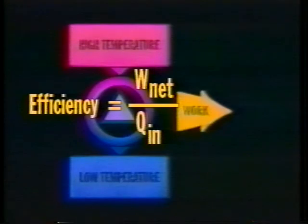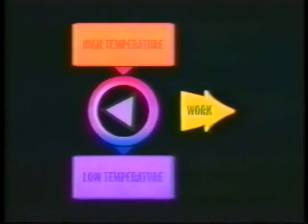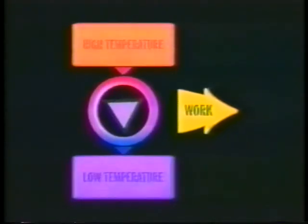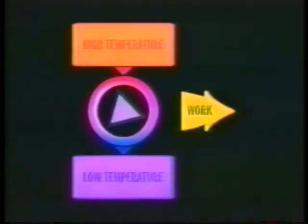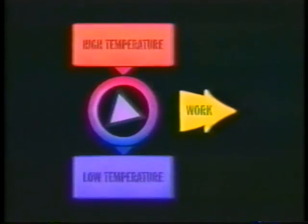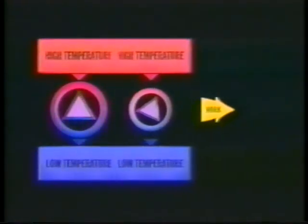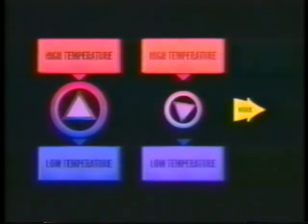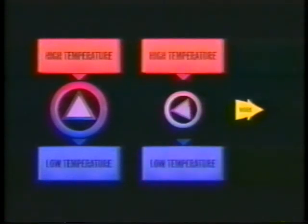If the water wheel analogy holds, the reservoir temperatures would be like the heights of the flumes. The maximum amount of work would be produced when the temperatures of the engine working fluid exactly match those of the reservoirs, so that the heat transfer into the working fluid would be reversible. But if the engine working temperatures do not match those of the reservoirs, some of the thermal potential to do work will be lost as heat is transferred to and from the working fluid across a finite delta T.